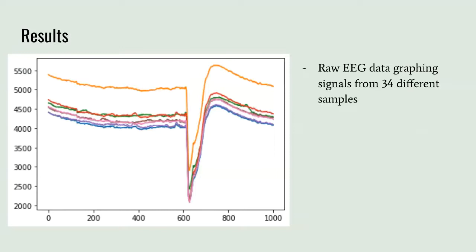This is an example of one of the graphs we obtained — our raw EEG data before applying any filters. This was from one of 34 different samples.